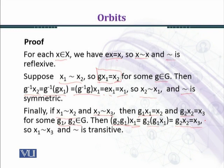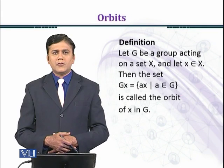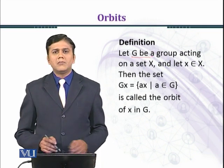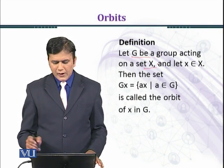So we can see that x₁ maps to x₃, and since g₂·g₁ is some element of the group G, therefore x₁ relates to x₃ and the relation is also transitive. So we have proved that the relation is an equivalence relation. Now we introduce orbits. Let G be a group acting on a set X.